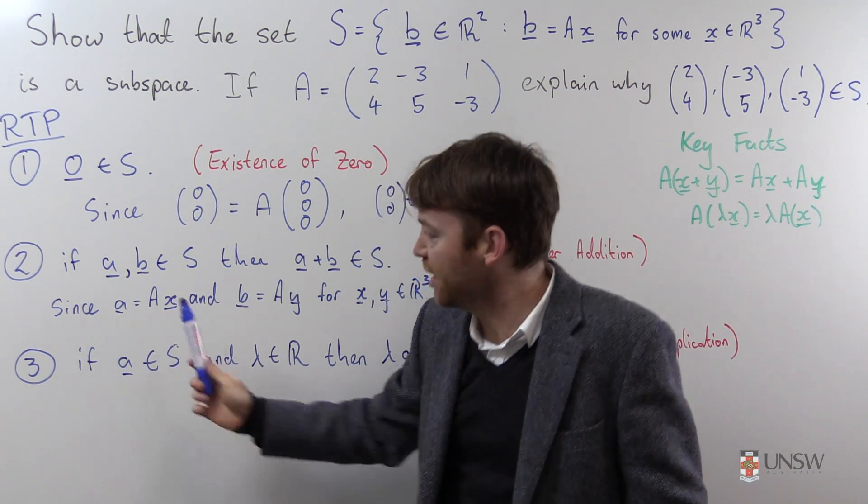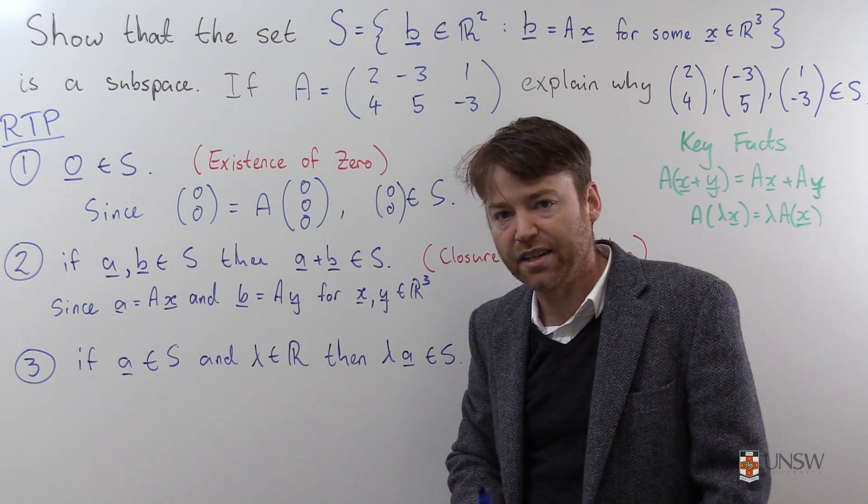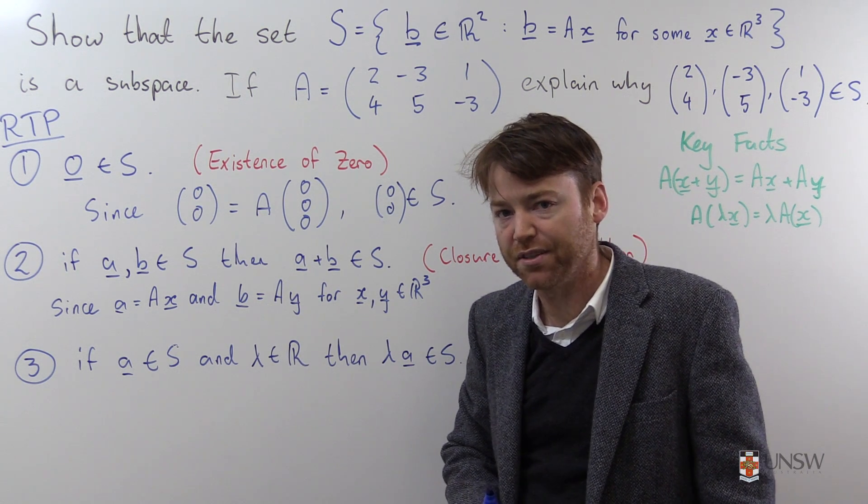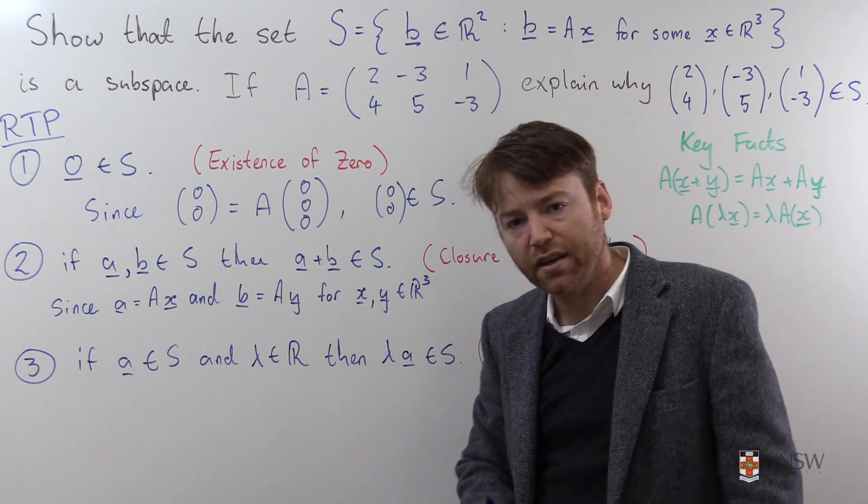I know that A looks like this and B looks like this because they're elements of S. That is exactly what it means to be an element of S.